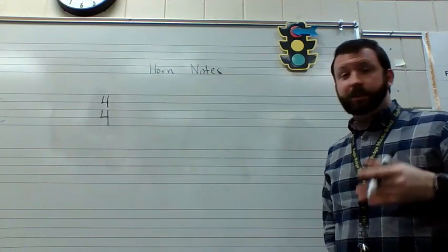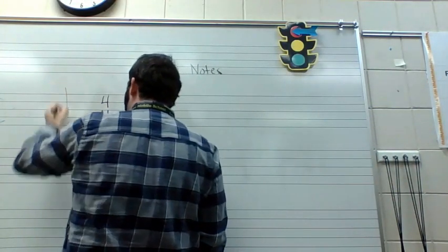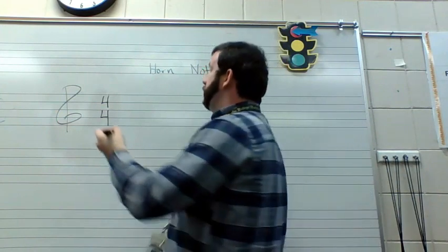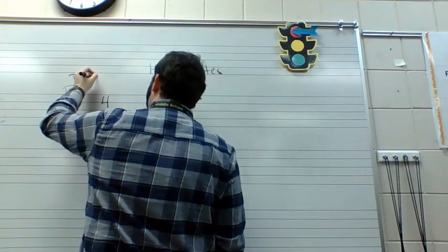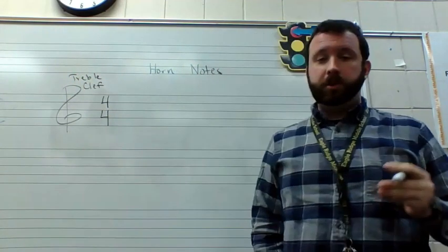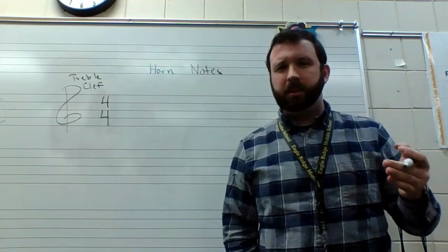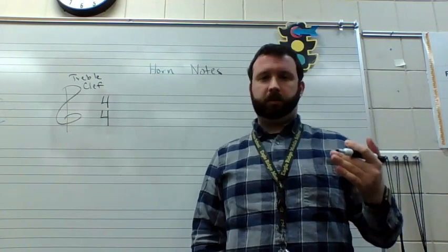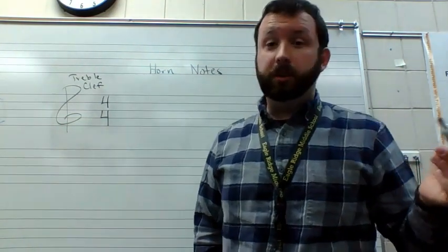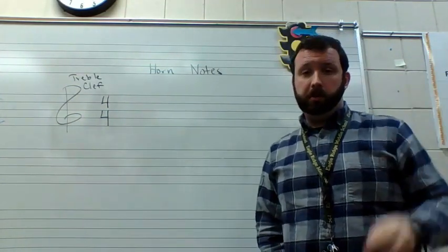Before we do that, a couple things that we have to talk about. Number one, before any line of music you will see this symbol and this is called a treble clef. Now a treble clef is a symbol that basically tells us that the horn as an instrument plays higher notes than some other instruments like trombone and tuba for example. The horn plays generally speaking a higher range of notes.